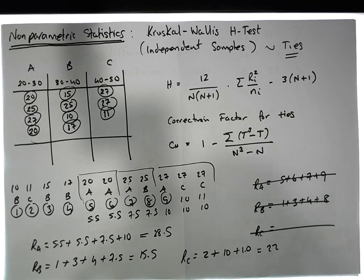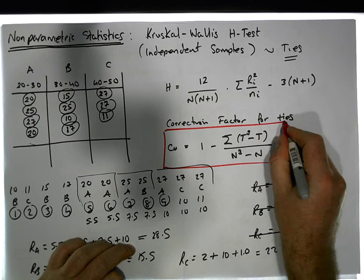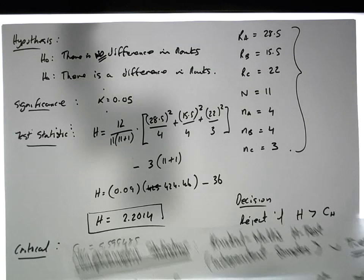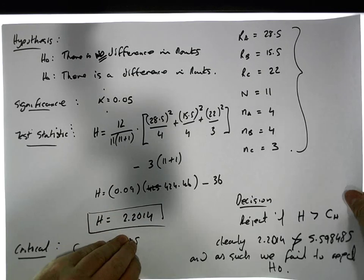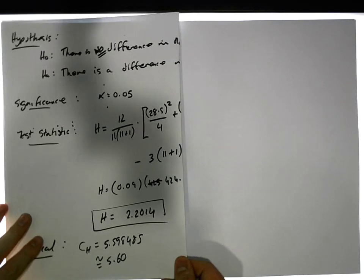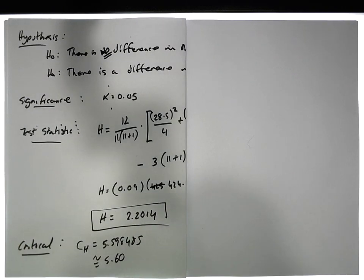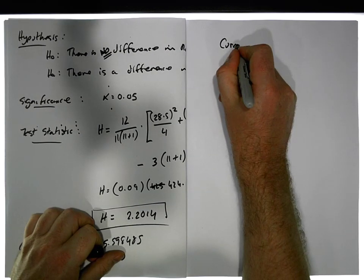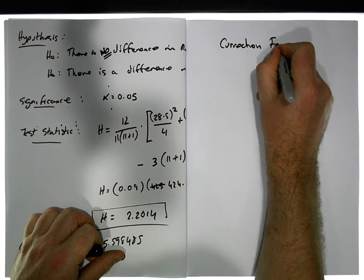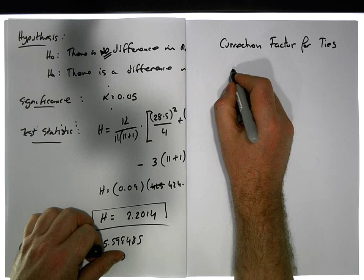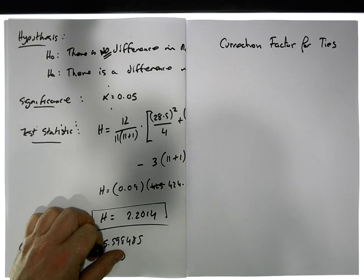So what I need to actually do is calculate this correction factor for ties, and the H value needs to be divided by this correction factor. Let's calculate this correction factor for ties and run it again.